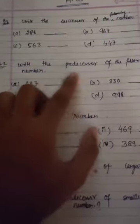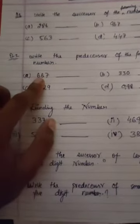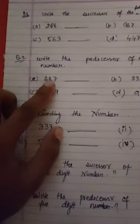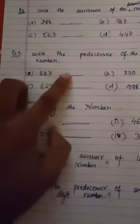Same thing you're going to do in question number two: you have to find the predecessor of the following number. But in this question number a, you do not add one, you have to subtract one and your answer will be here.